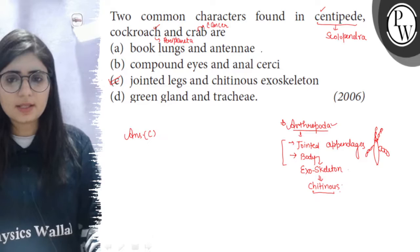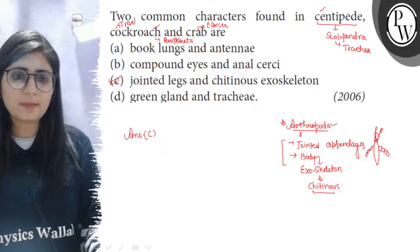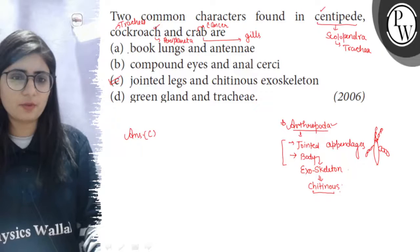Because here the respiratory organs are different. Like in centipedes there is trachea for respiration, in cockroaches there is a tracheal system, while in Cancer or crab the respiration occurs by gills. So book lungs are not present in these.